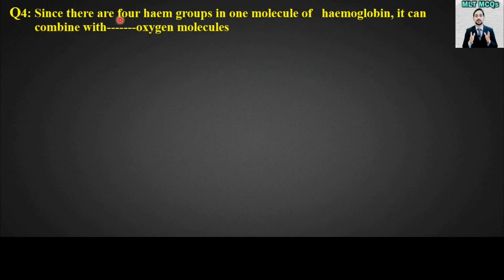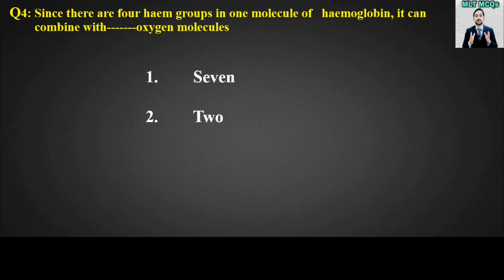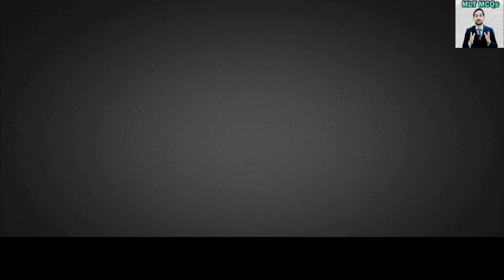MCQ number four: Since there are four heme groups in one molecule of hemoglobin, it can combine with blank oxygen molecules. Options are: two, one, or four. The right answer is option number four — four oxygen molecules.